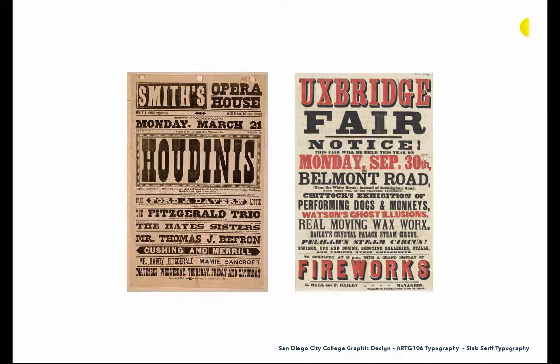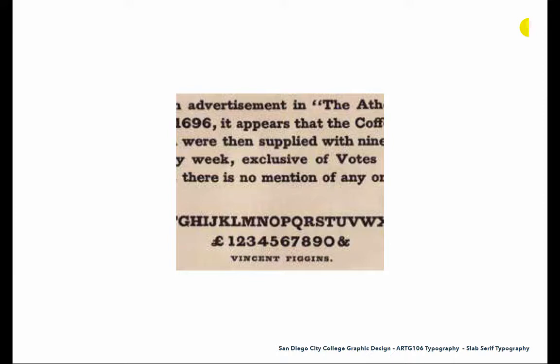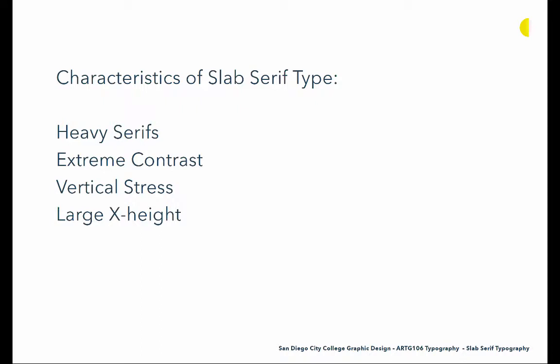Here's an example of some of the posters that demanded this attention. You can see in Houdini's these heavy, heavy slabs at the bottom of these serifs that are really attracting attention. It creates a boldness, and that's really what people were after when they developed these kinds of typefaces. We first saw these in 1815 with Figgins Antique — we can see this development where they're enlarging and really emphasizing these serifs to get attention.